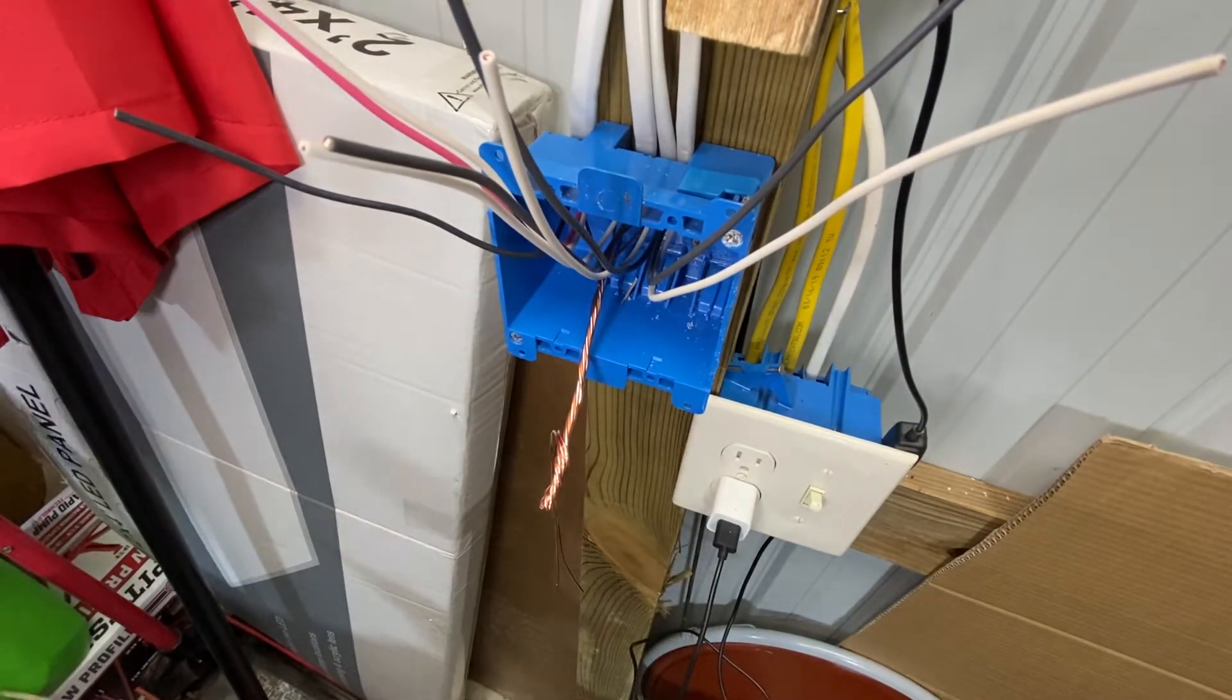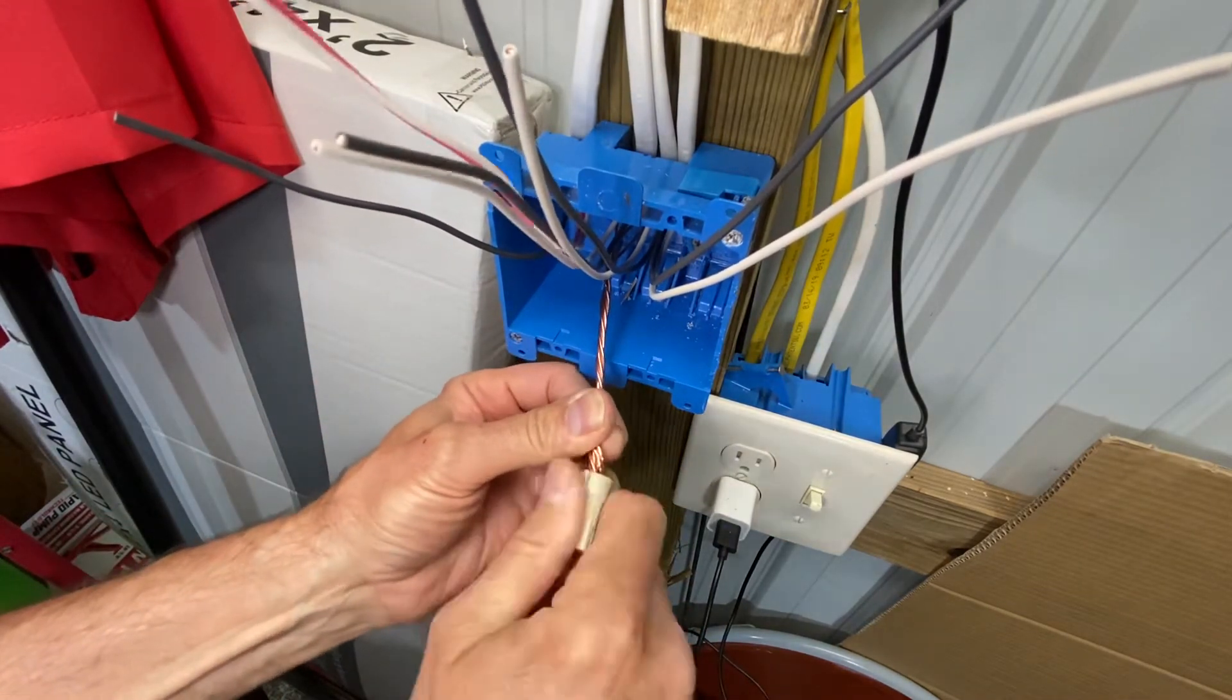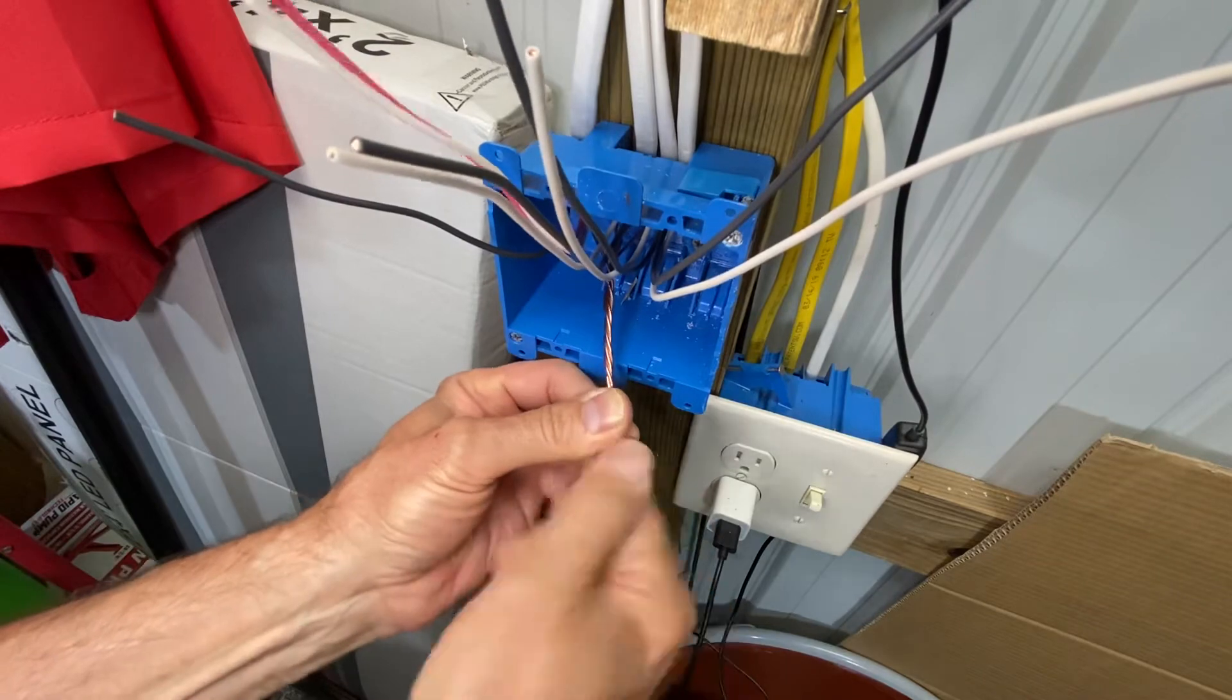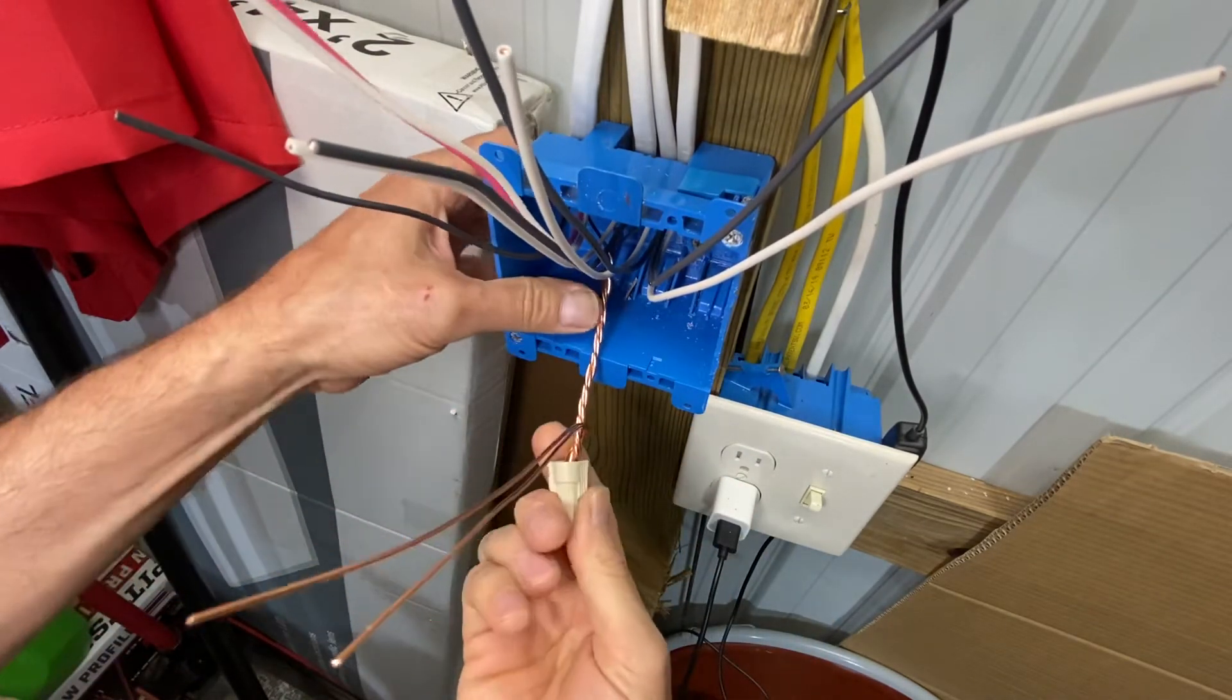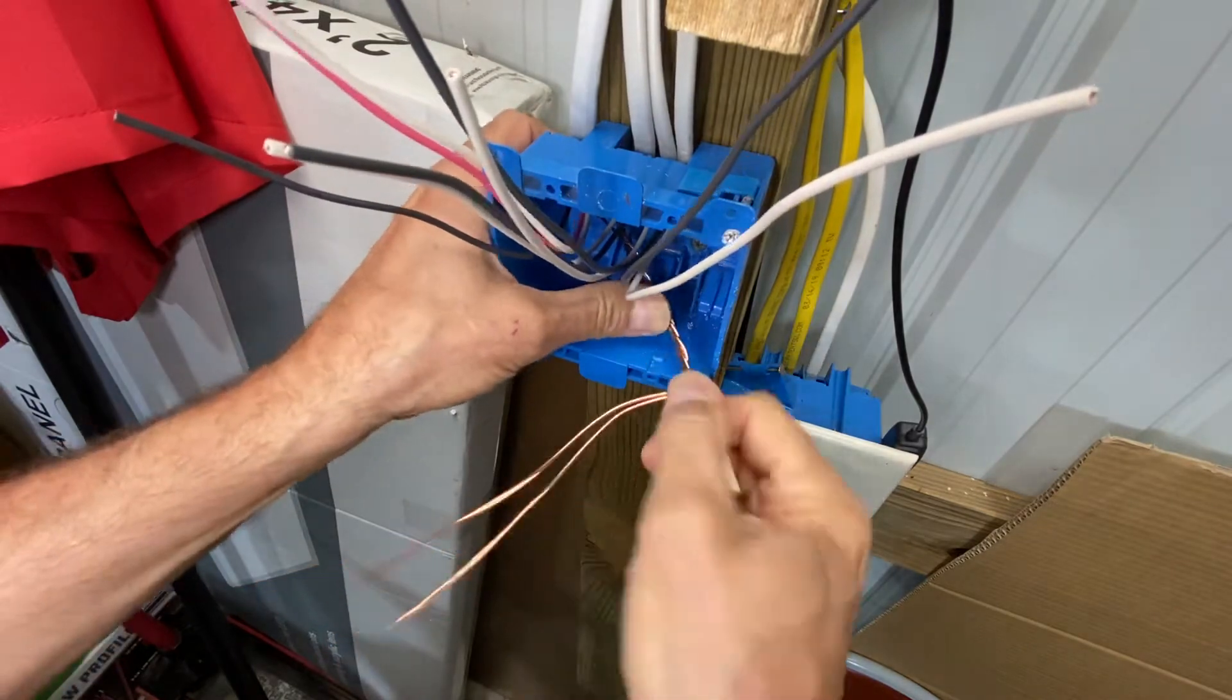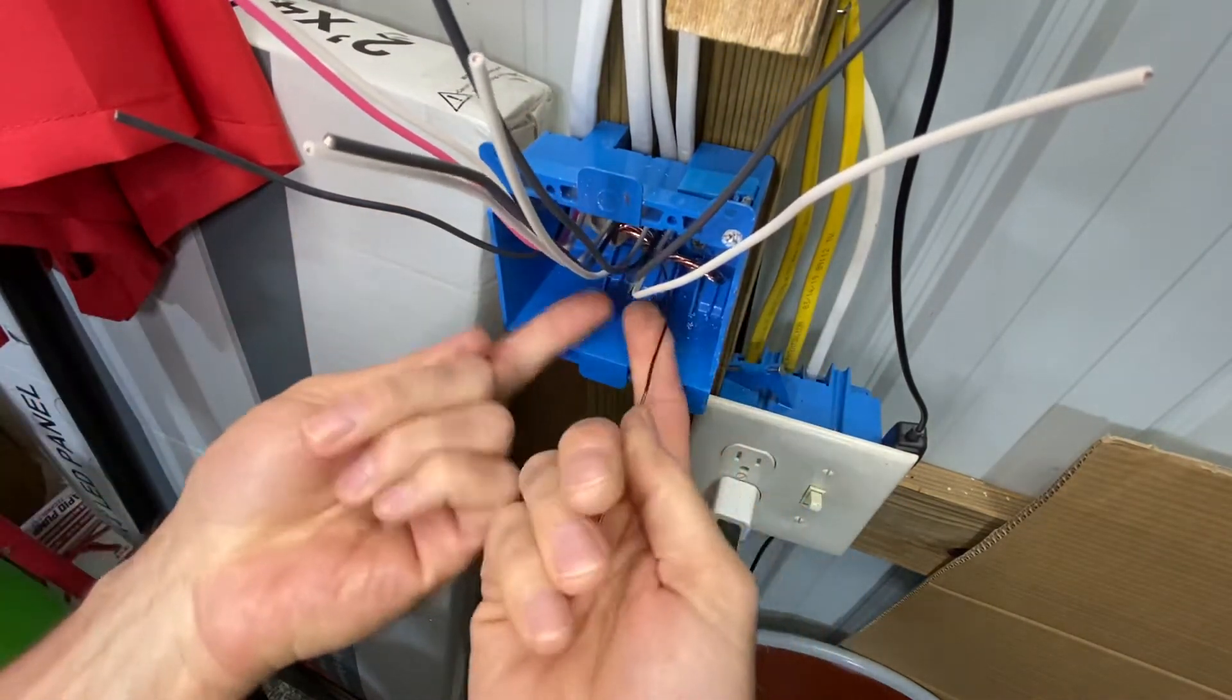Okay. Then, wire nut. Put that on those. Twist it just enough to where it twists the wire and it's good enough. Then, fold them neatly back into the box like that. And then, one goes to each switch.